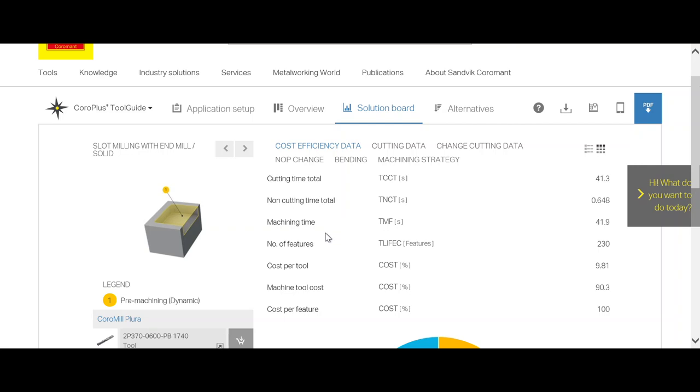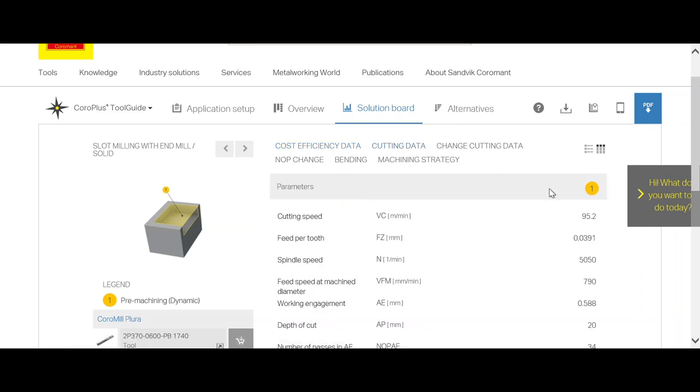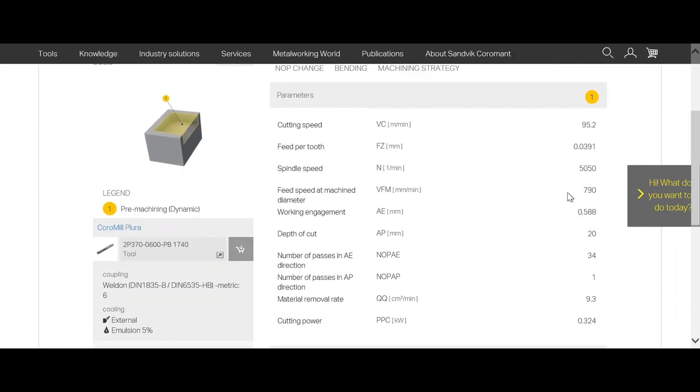We see it takes 41 seconds per slot and a total number of features. So estimated tool life, we have 230 slots. Now we got all of the information we need. Then we are ready to see it on the machine. So let's take a look.